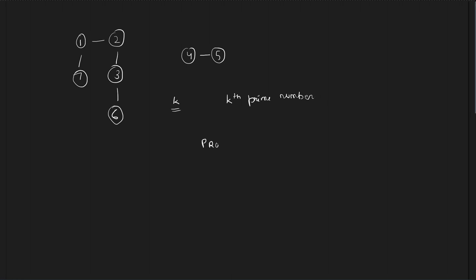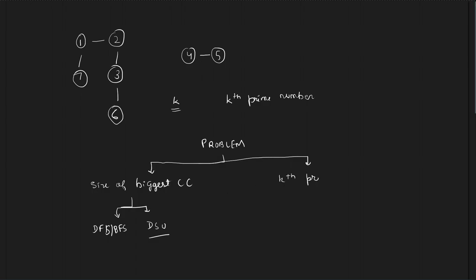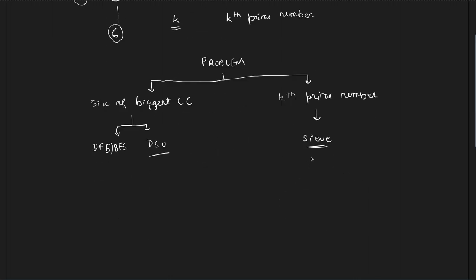Once we've found the biggest connected component of size K, we have to find the Kth prime number. The problem has been divided into two completely independent sub-tasks. First, find the size of the biggest connected component — you can do this using a simple DFS, BFS, or a Disjoint Set. Second, find the Kth prime number using a technique called the Sieve of Eratosthenes.